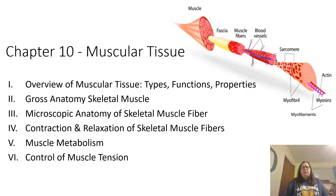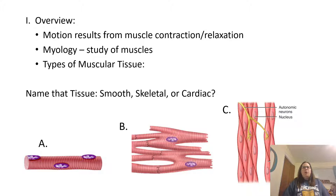We're going to be looking at chapter 10 now with the muscular tissue. A quick overview: when we talk about muscular tissue, motion results from muscles contracting and then relaxing. Myology is the study of muscles, and there are three types of muscular tissue which we discussed back in chapter four. The three tissues are smooth, skeletal, and cardiac. Picture A is skeletal muscle, B is cardiac, and C is smooth.